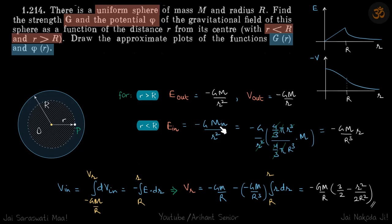So E_in is minus G M_in by r squared. So inside mass we can write as the volume of the shaded part divided by total volume into total mass. So that will be four-thirds pi small r cubed by four-thirds pi capital R cubed into M, which comes to be minus GM r by R cubed. So it's proportional to the distance from the center.